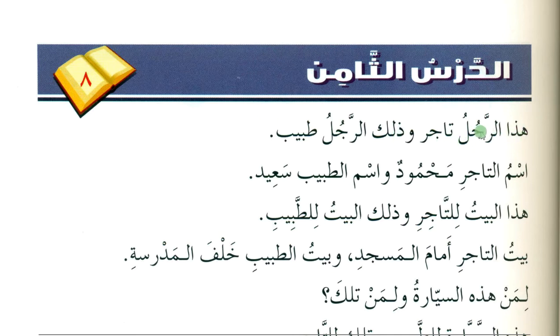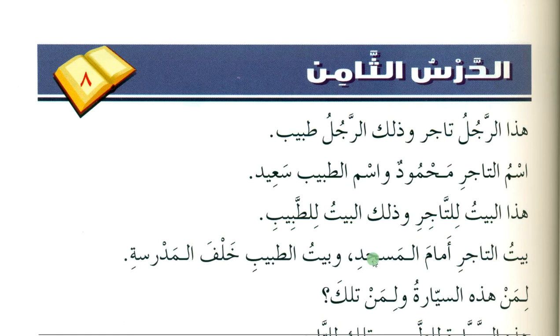Lesson eight: haza rajulu taajir — 'this man is a merchant'. Wa zalika rajulu tabib — 'and that man is a doctor'. Ismut-taajiri Mahmood — 'the name of the merchant is Mahmood'. Wa ismut-tabibi Saeed — 'and the name of the doctor is Saeed'. Haza al-baytu lil-taajir — 'this house belongs to the merchant'. Wa zalika al-baytu lil-tabib — 'and that house belongs to the doctor'. Baytu at-taajiri amama al-masjid — 'the house of the merchant is in front of the masjid'. Wa baytu at-tabibi khalfa al-madrasa — 'and the house of the doctor is behind the school'.